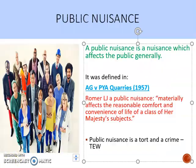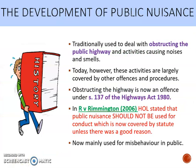Public nuisance is a nuisance which affects the public generally. It was defined in PYA Quarries by Romer LJ, who said that a public nuisance 'materially affects the reasonable comfort and convenience of life of a class of Her Majesty's subjects.' What's key here is 'a class of Her Majesty's subjects' — this is more than a dispute between two neighbours; it's where a group or class of people is being affected.